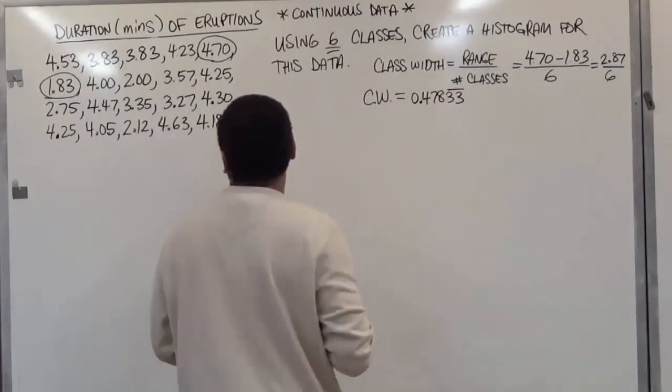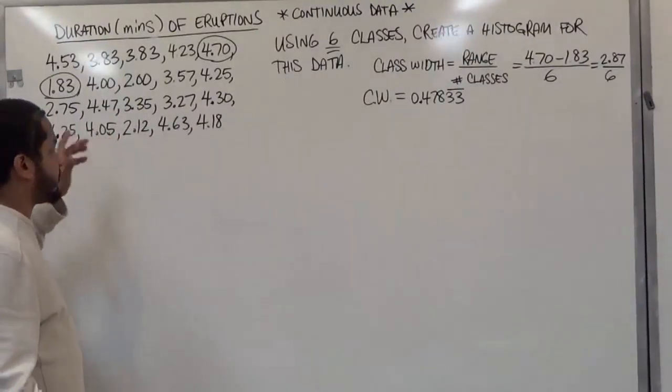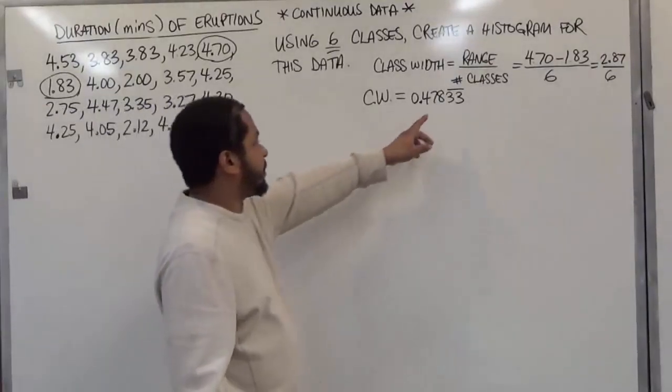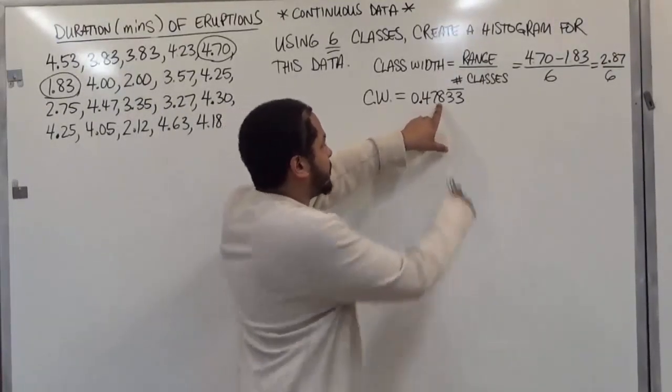Now be very careful when you're making your class width because again, as I said, we have decimals here. So just imagine these were whole numbers. So we're going to move the decimal two places over to imagine where we're going to round up. Now if I see the decimal here, I round it up two places and I see I have 47.8.